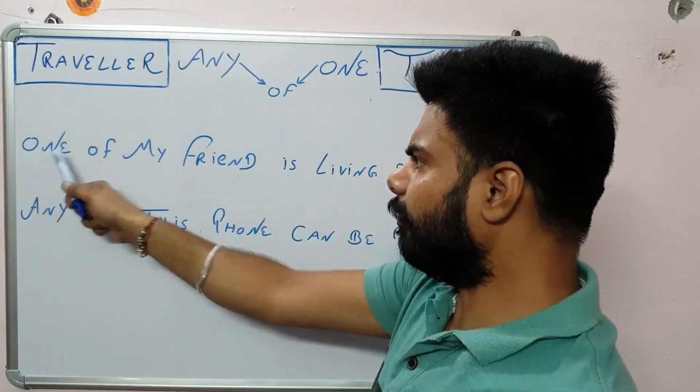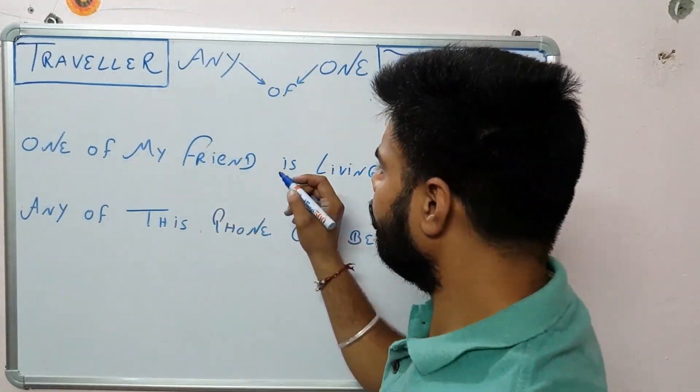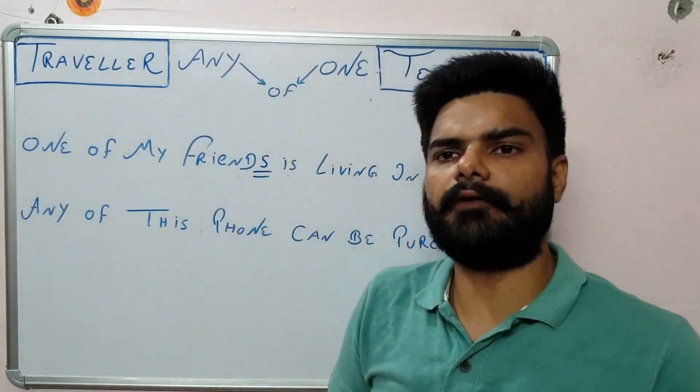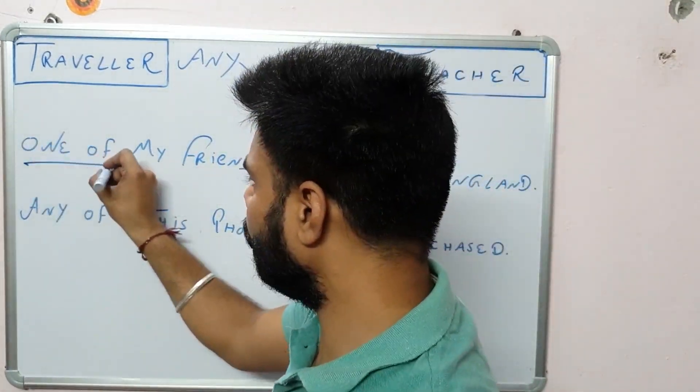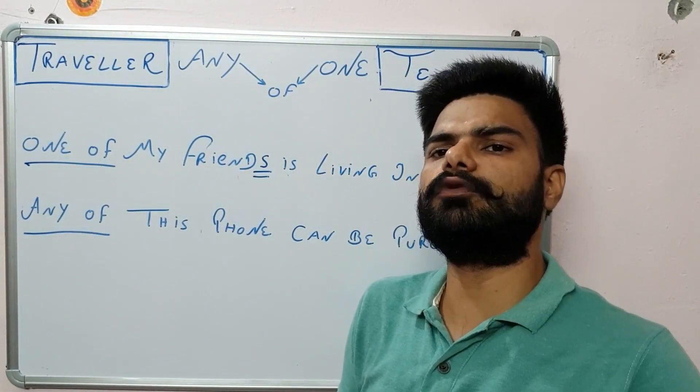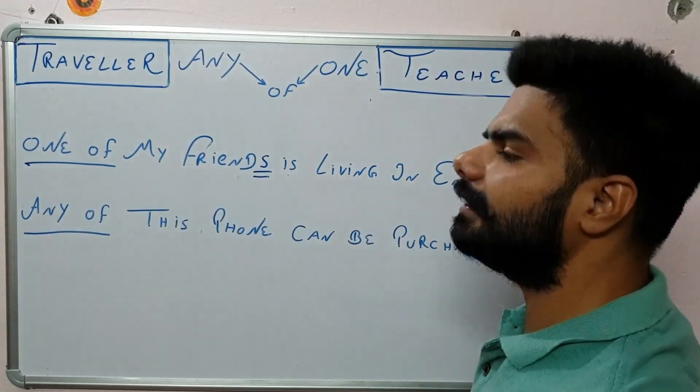Because one of my friend, now over here the friend is a single case. We have to say friends. The rule is that after the words one of and any of, we always have to make the plural forms. We always have to make the plural nouns over there. One of my friends is living in England.